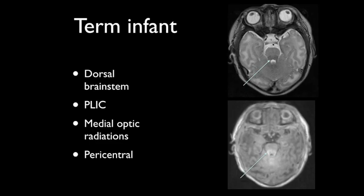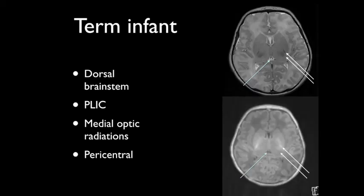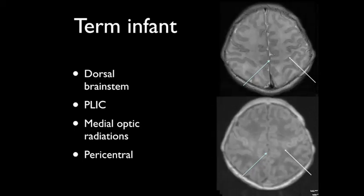To illustrate this, let's look at a term infant here with T2-weighted images on the top and T1-weighted images at the bottom. You can see that the dorsal brainstem indicated by the arrows is myelinated, characterized by T2 hypointensity and T1 hyperintensity. The posterior limb internal capsule is also myelinated, and the ventral lateral thalami are also myelinated. The medial optic radiations are also myelinated, shown by T2 hypointense linear signal. The periorlandic and pericentral areas are myelinated as well. This is a typical appearance in a term neonate.